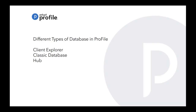Classic Database is very similar to Client Explorer, but it's thinned down, and when you're actually indexing files you're only indexing one year at a time. There are some filtering features and queries available in Classic Database. You can also create reports and export them to both Client Explorer and Classic Database, so there's some overlapping functionality.